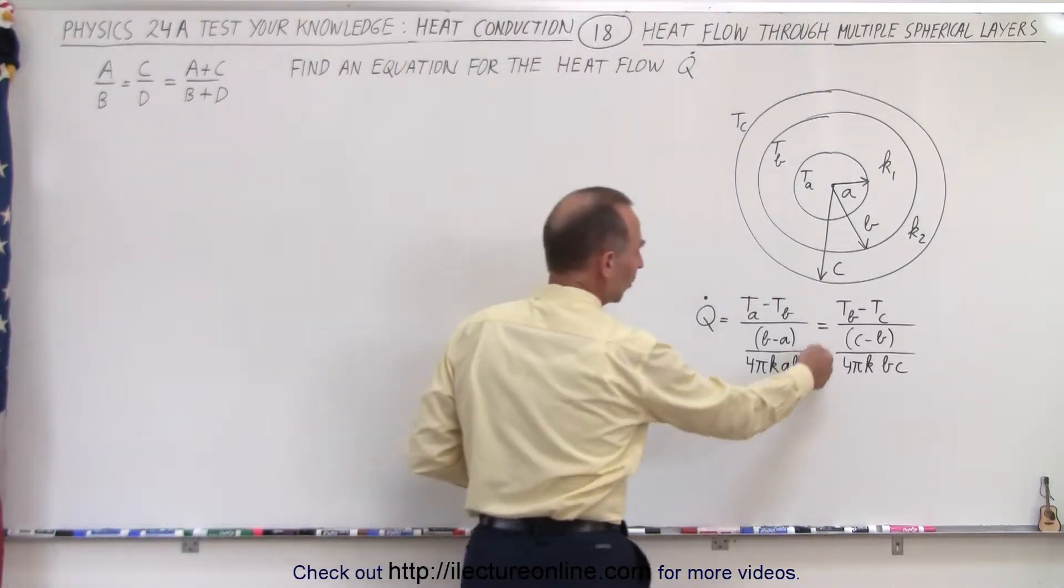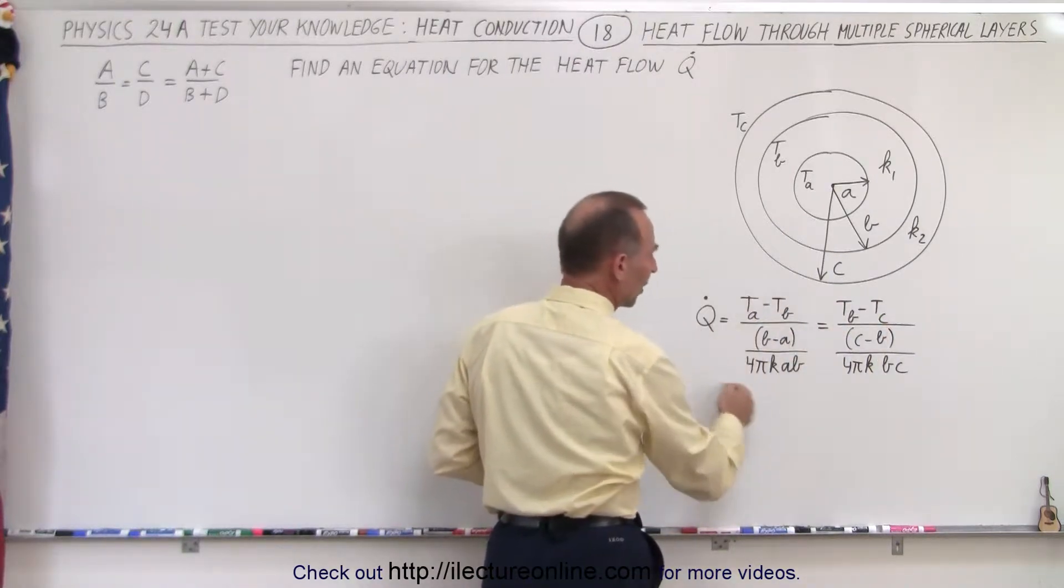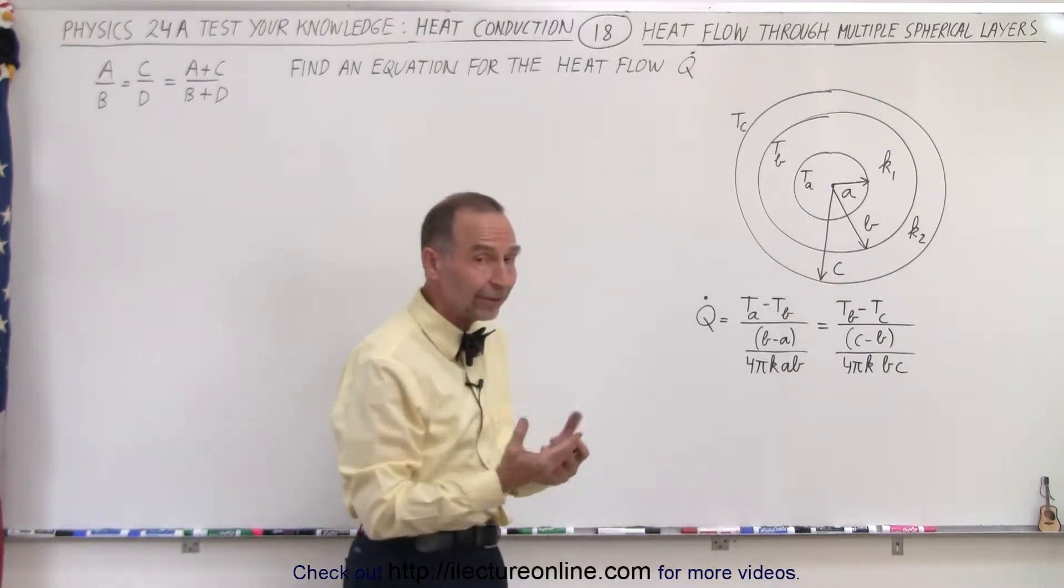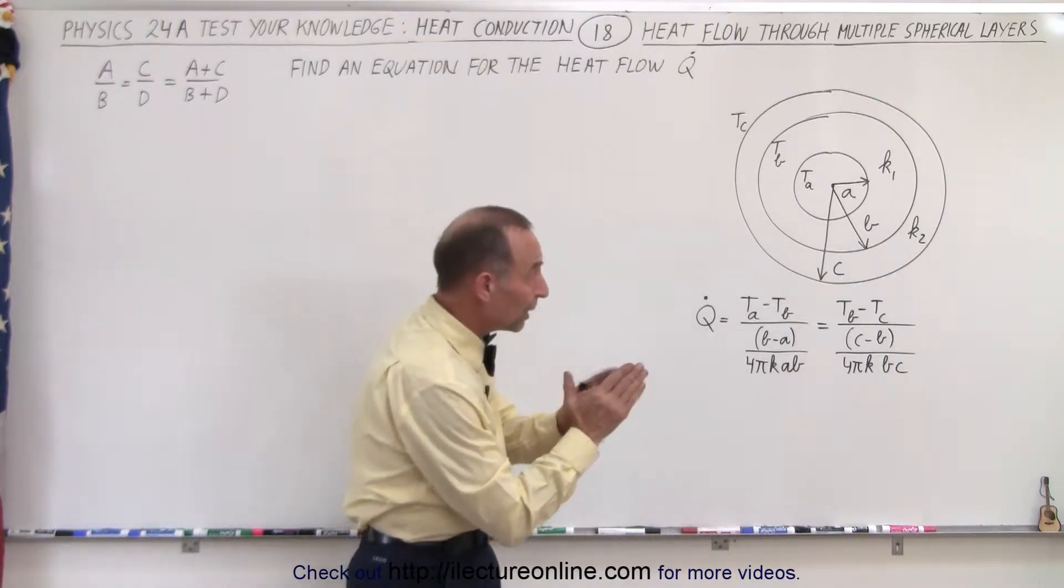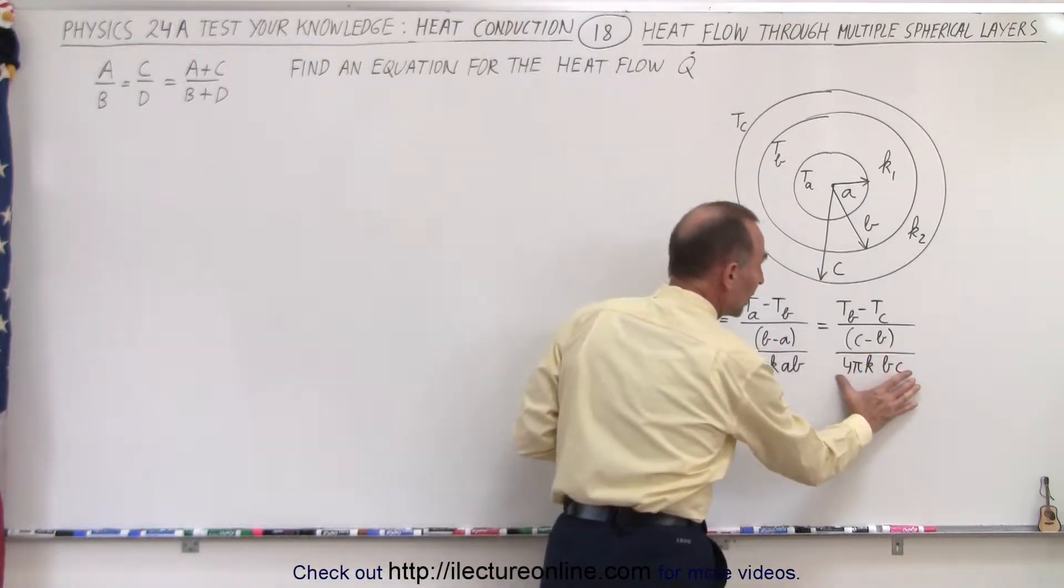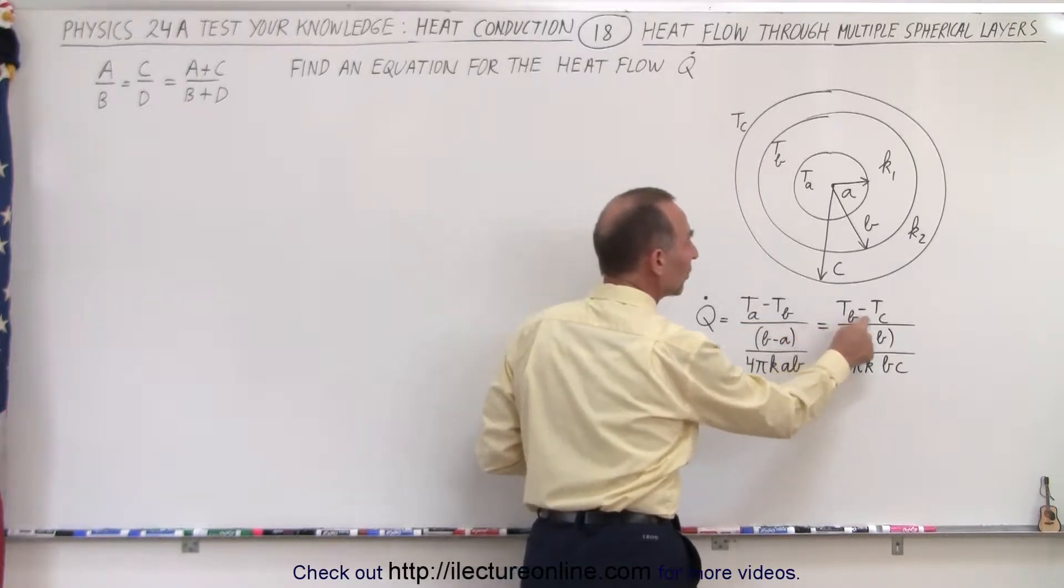Notice that if we look at this alone right here, we ignore this portion of the equation. This is the equation that we derived in the previous video. But now that I have the second layer, and realizing that the heat flow through each layer must be constant, we can say that Q dot must then also be equal to this. Notice that TA is bigger than TB and TB is bigger than TC.